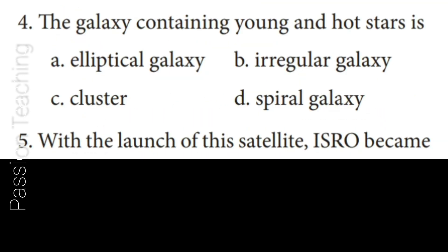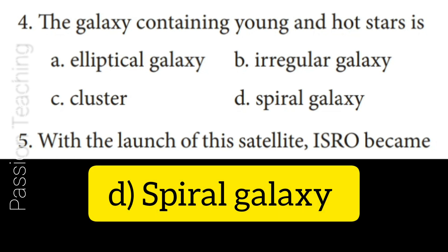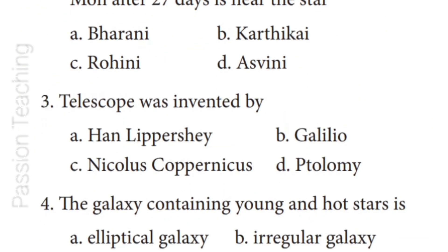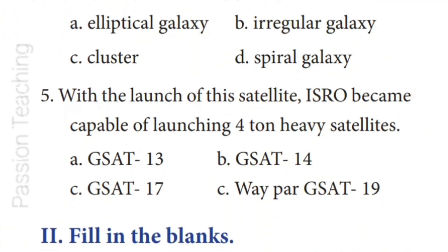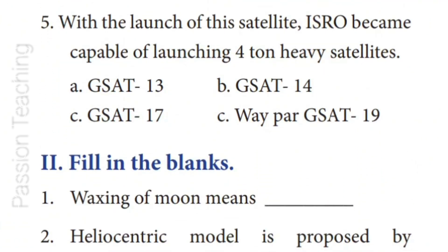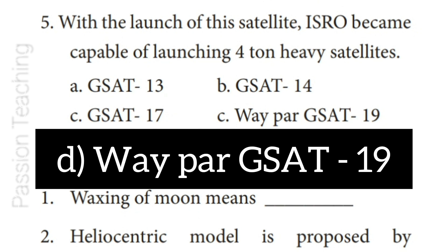Question 4: The galaxy containing young and hot stars is the Spiral Galaxy. Question 5: With the launch of which satellite did ISRO become capable of launching 4-ton heavy satellites? Answer: Option D — GSAT-19.